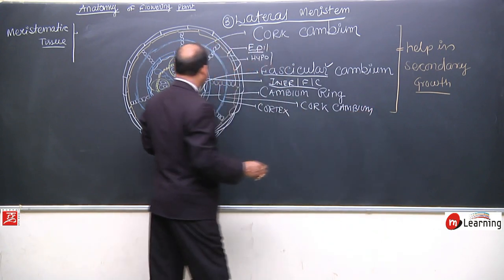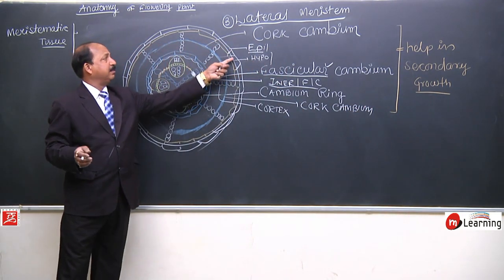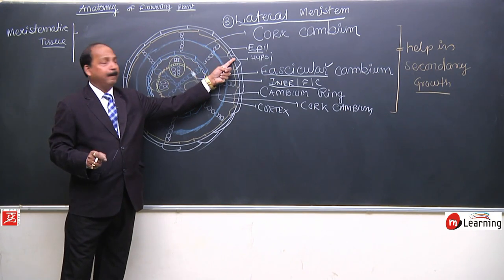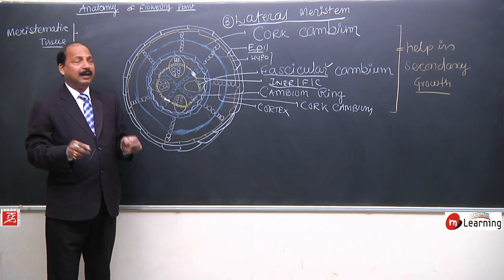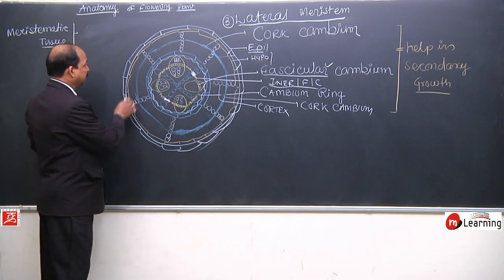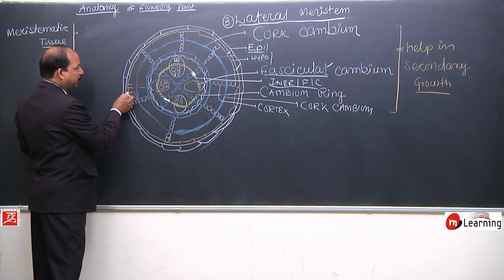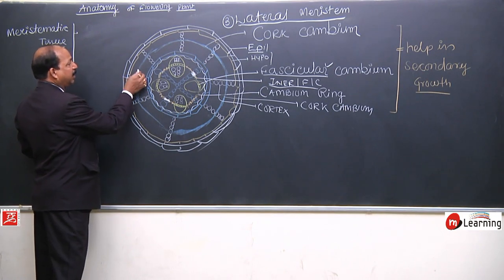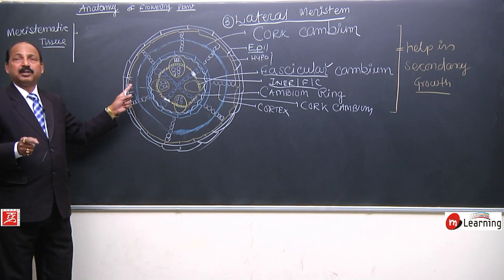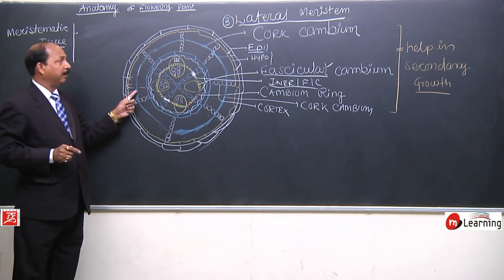Cork cambium was formed when new cells were being cut off and epidermis was under pressure, causing the epidermis to rupture. At that time, the protective layer formed was named cork cambium. So cork cambium is also an example of lateral meristem.